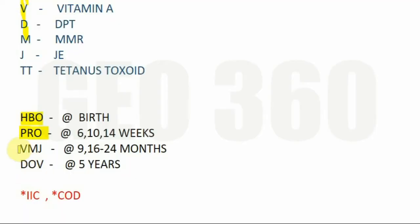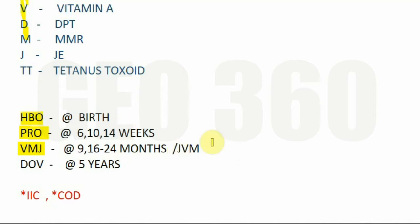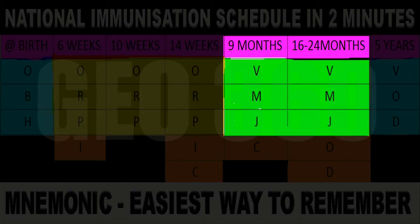After that you come to the months — 9 months and 16 to 24 months. At this period you have to remember the mnemonic VMJ, or JVM — you can keep it either way. JVM could stand for Java Virtual Machine to help you remember. J stands for Japanese encephalitis vaccine, M stands for MMR vaccine, and V stands for vitamin A.